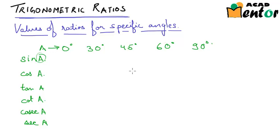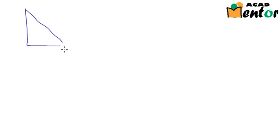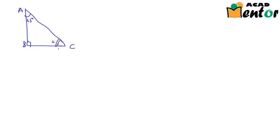Let's start with 45 degrees. Let me draw the triangle. Let's say this is triangle ABC, with a right angle at B and angle A is 45 degrees. So when angle A is 45 degrees and angle B is 90 degrees, angle C would have to be 45 degrees.